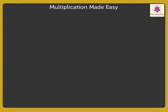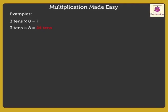Look at this example. Here, we have to multiply three tens and eight. When we multiply three tens into eight, we get twenty-four tens. We know that twenty-four tens is equal to twenty-four into ten, which is equal to two-hundred-forty, which is our answer.